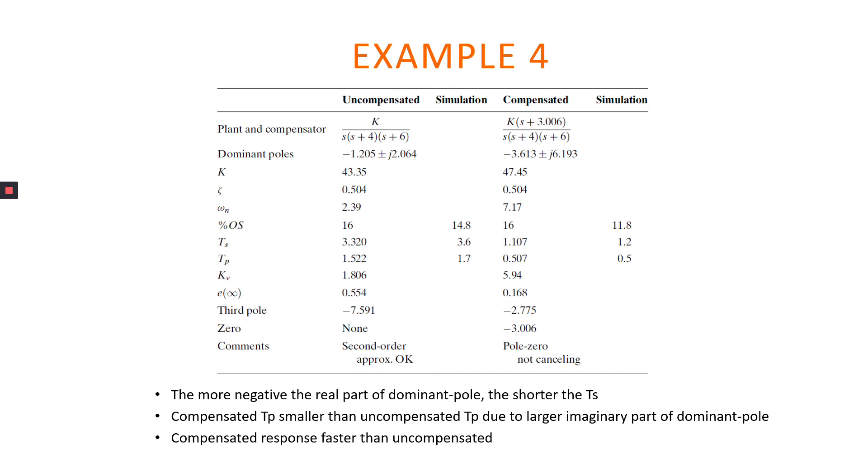So this table summarizes the response for uncompensated system with the compensated PD compensator after we add ZACC negative 3.006, and also the compensated system has closed loop third pole which is negative 2.775. So the compensated system demonstrated faster response in terms of settling time.